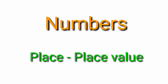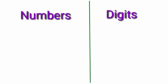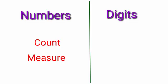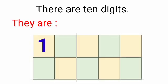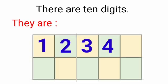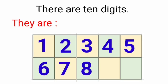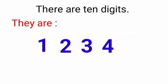Before we go into our topic, we have to know about numbers and digits. Numbers are used to count and measure, and digits are used to write numbers. There are 10 digits: 1, 2, 3, 4, 5, 6, 7, 8, 9 and 0. With these digits, we can write any number.